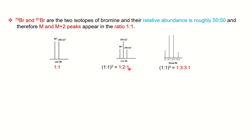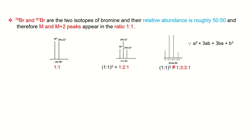So for 2 bromine atoms you get a 1:2:1 ratio, while for 2 chlorine atoms it was 9:6:1. If you have 3 bromine atoms, along with M+4 you will also have an M+6 peak. Instead of squaring, for 3 atoms you cube the ratio. Using the formula (a³ + 3a²b + 3ab² + b³), you will get an intensity ratio of 1:3:3:1, which governs that your molecule has 3 bromine atoms.